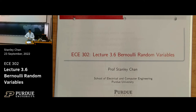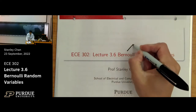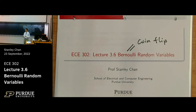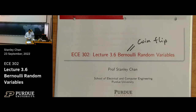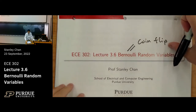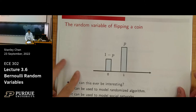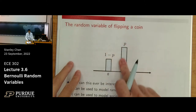If you ever wonder what a Bernoulli random variable is, it is a coin flip experiment — very simple. You have a coin, a head, and a tail. There's a probability of getting a head and a probability of getting a tail. What is the expectation? What is the variance? But what would be the application? That should be the focus here. So here is the probability of flipping a coin — you have two states, zero and one.